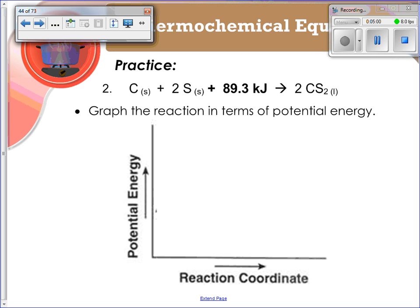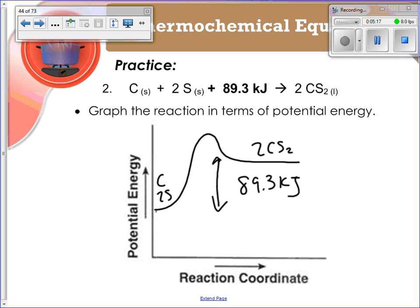So if we're going to write this one, remember this is endothermic. So something looks sort of like that. We've got C and 2 S here, 2 CS2. And then the energy that's going to be absorbed is 89.3 kJ. And that is an endothermic reaction.